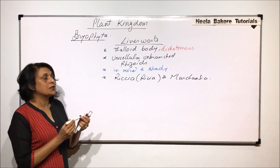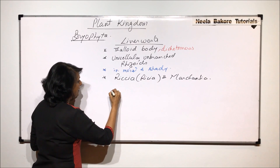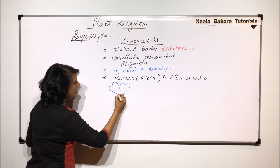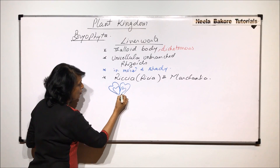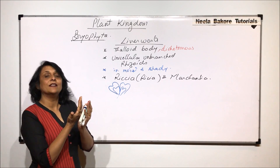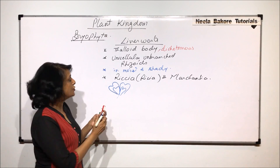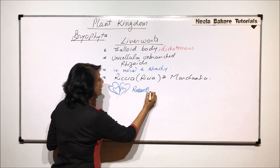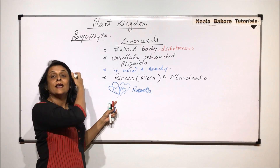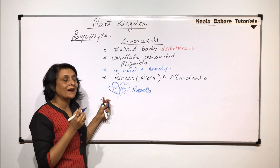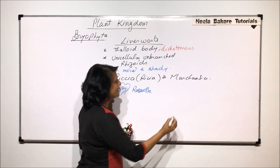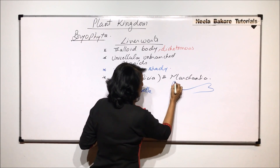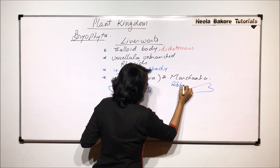In the case of Riccia, the branching is such that bifurcation produces layers after layers arranged one over the other, and this is called the rosette arrangement — the dichotomous branches are arranged compactly. Whereas in the case of Marchantia, it also shows dichotomous branching, but it results in a long ribbon-like structure.